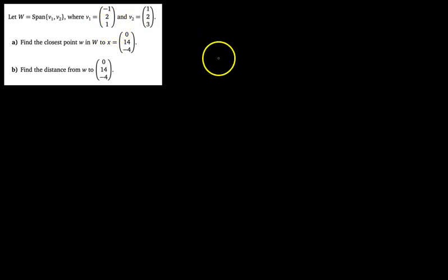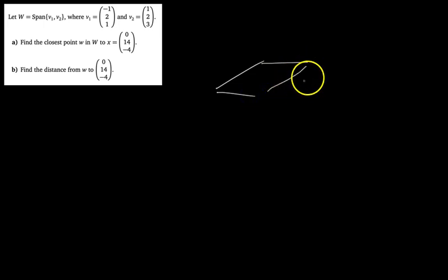We have this subspace W, which is the span of these two vectors. A quick check: are V1 and V2 scalar multiples of each other? The answer is no, so that means these two vectors are linearly independent. The span of two linearly independent vectors is a plane. So therefore subspace W is a plane. We'll start off with a quick sketch of a plane like this.